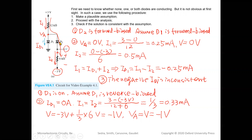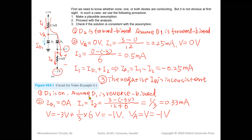If you want, you can redraw the circuit replacing D1 with an open circuit and D2 with a short circuit to verify VA = V = −1 V. A student asks: is the guess-and-check method the only approach? Unfortunately, yes — but you can quickly estimate the sign of VA by inspection rather than computing exact numbers, which lets you make the right assumption on the first try.